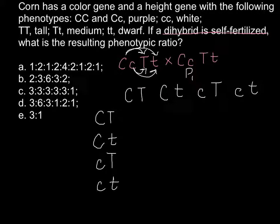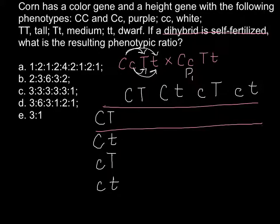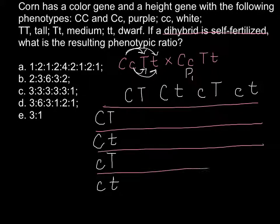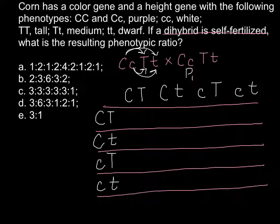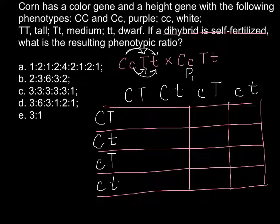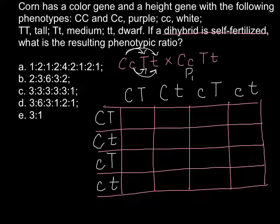Now we build a Punnett square. We are now able to find all the possible genotypes and all the possible phenotypes as well. This is our Punnett square, and as you can see, we have 16 cells that we have to fill with all possible genotypes.